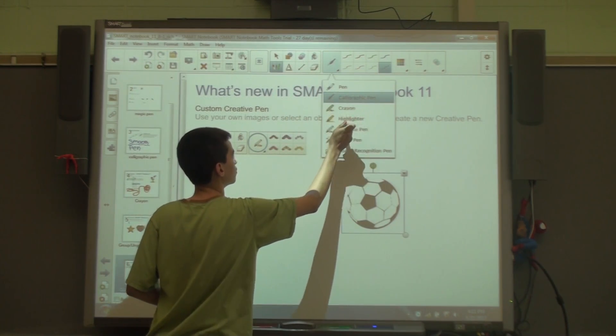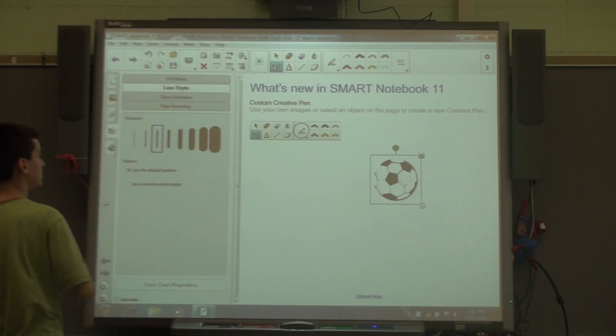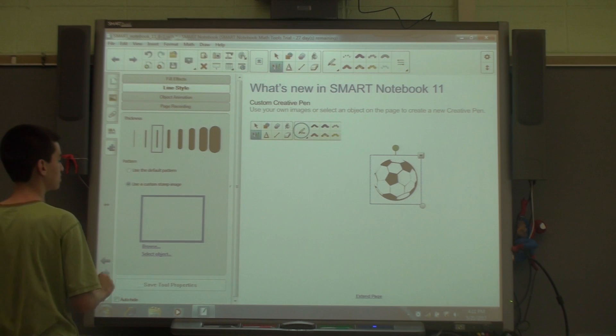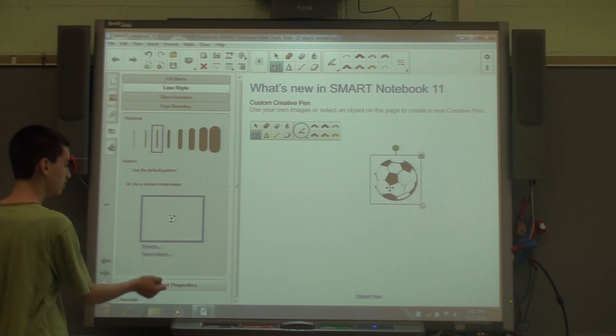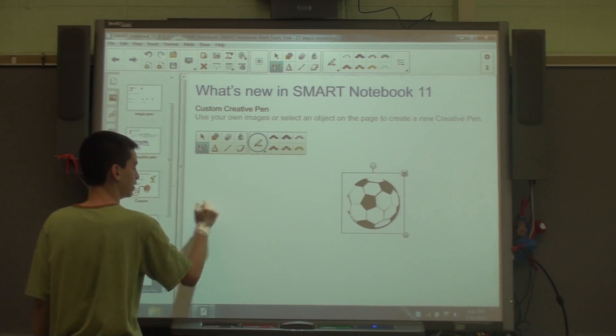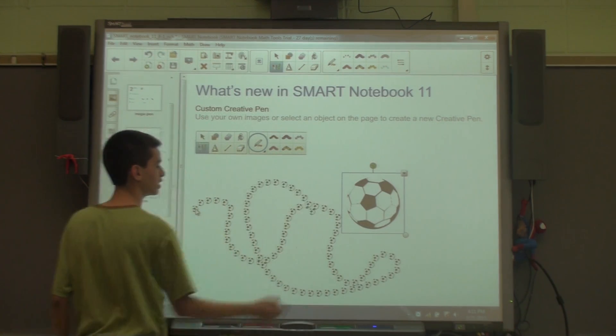Custom stamp, select an object. I selected that soccer ball as shown right here. And now whatever I write, it will be a soccer ball.